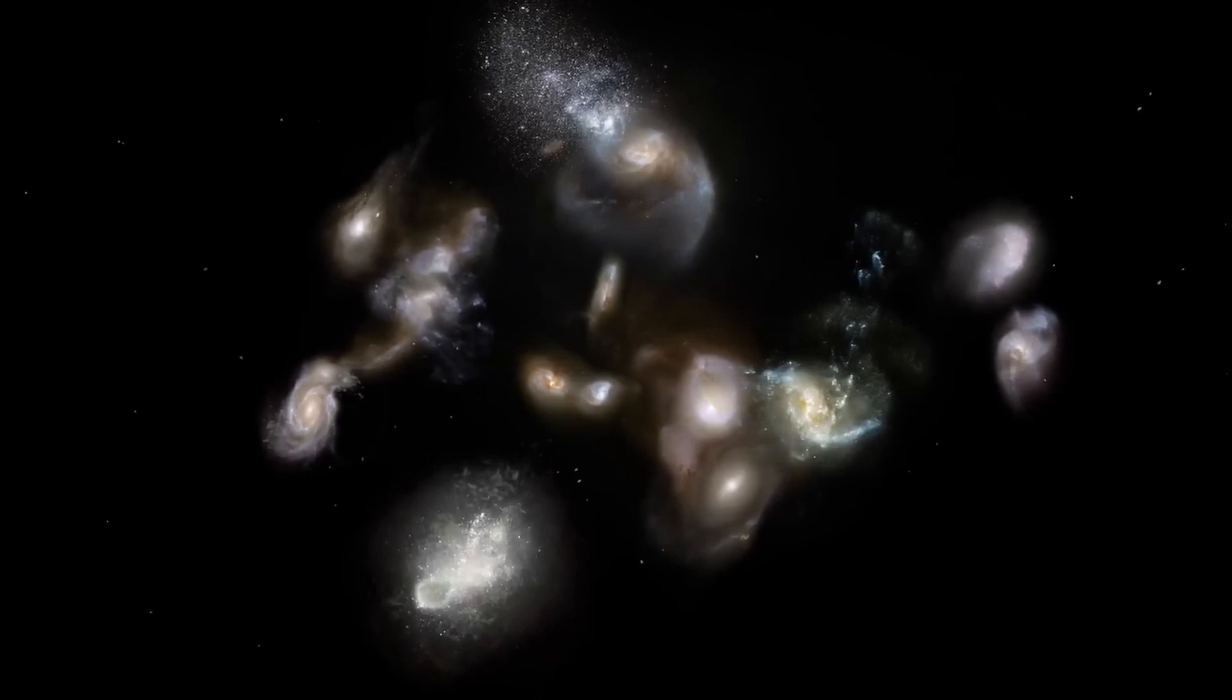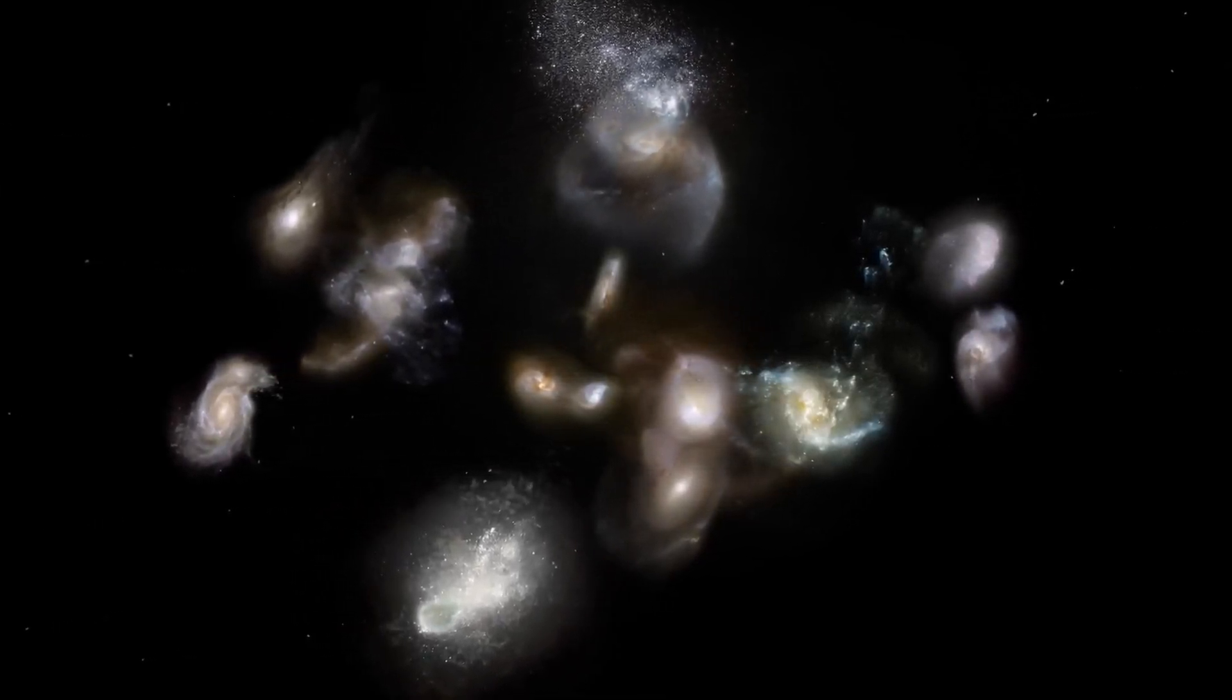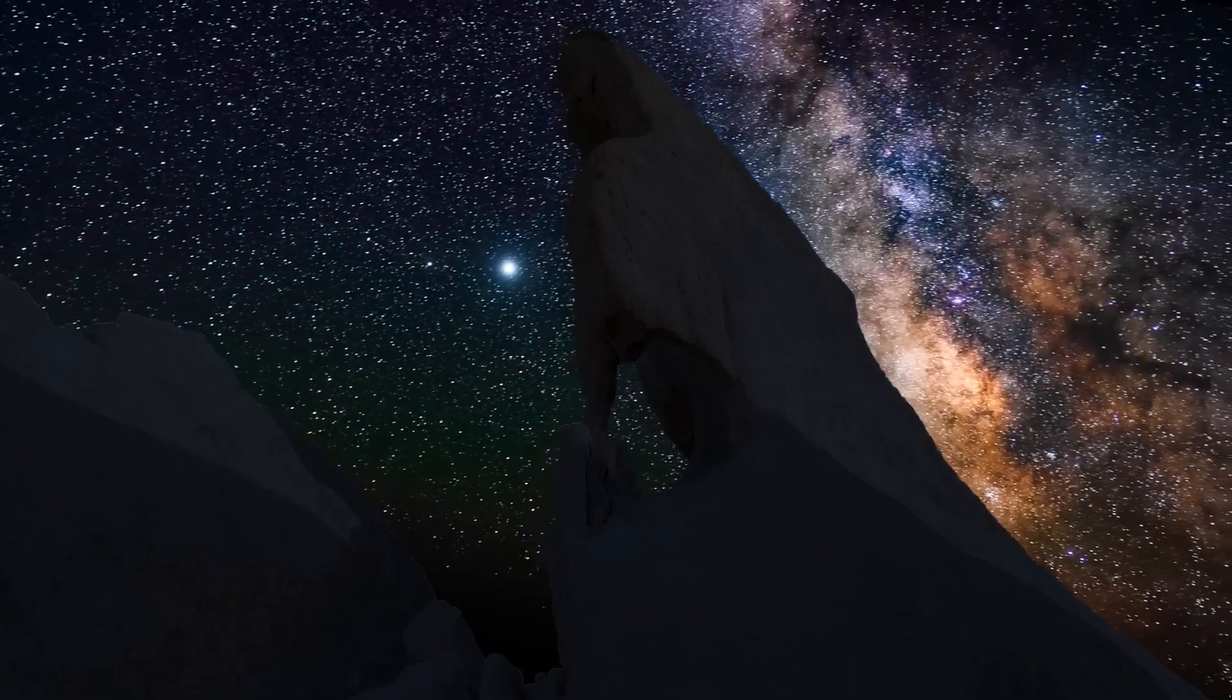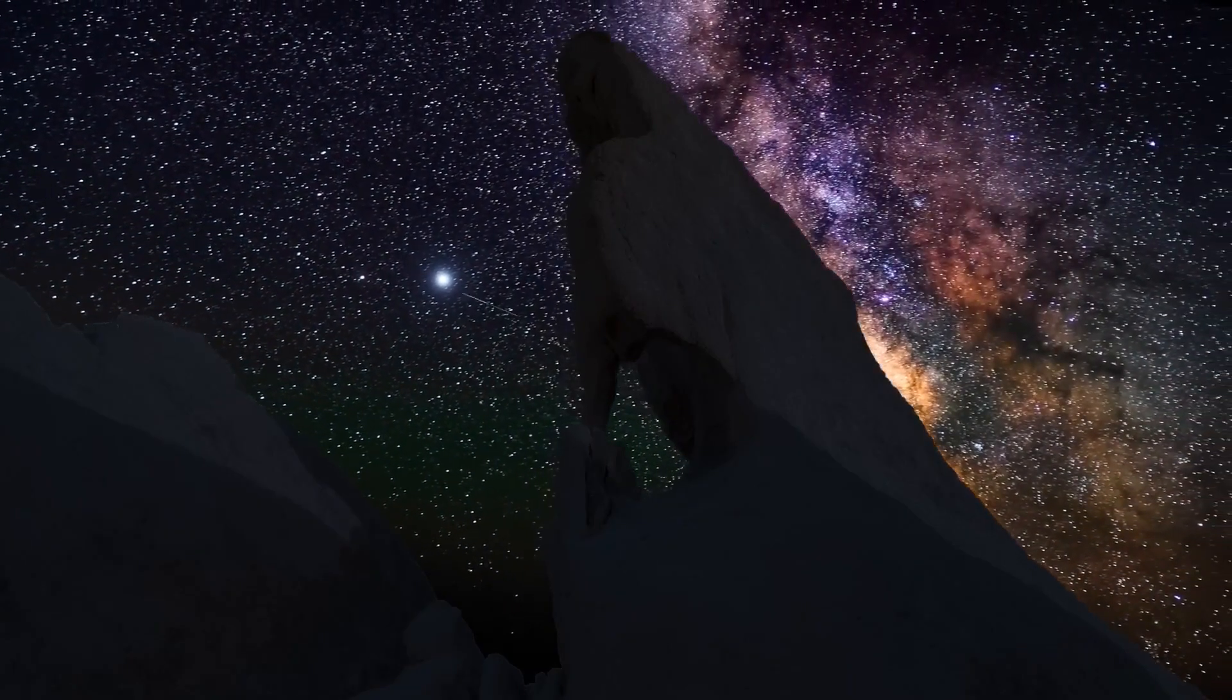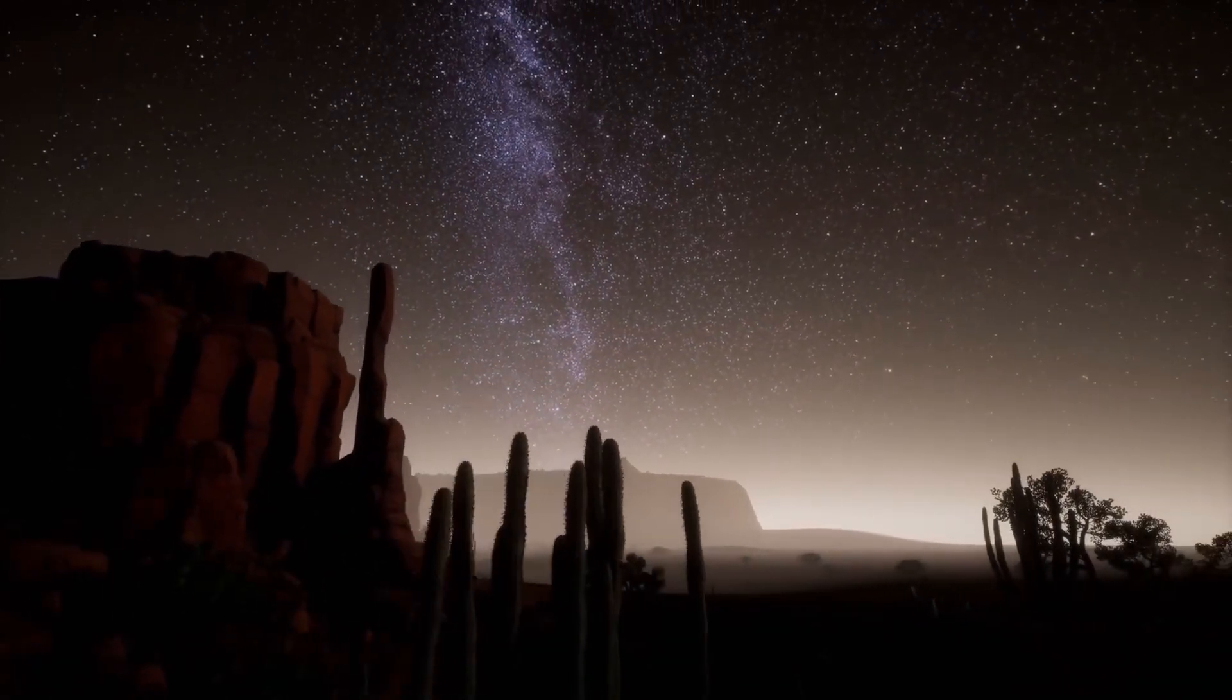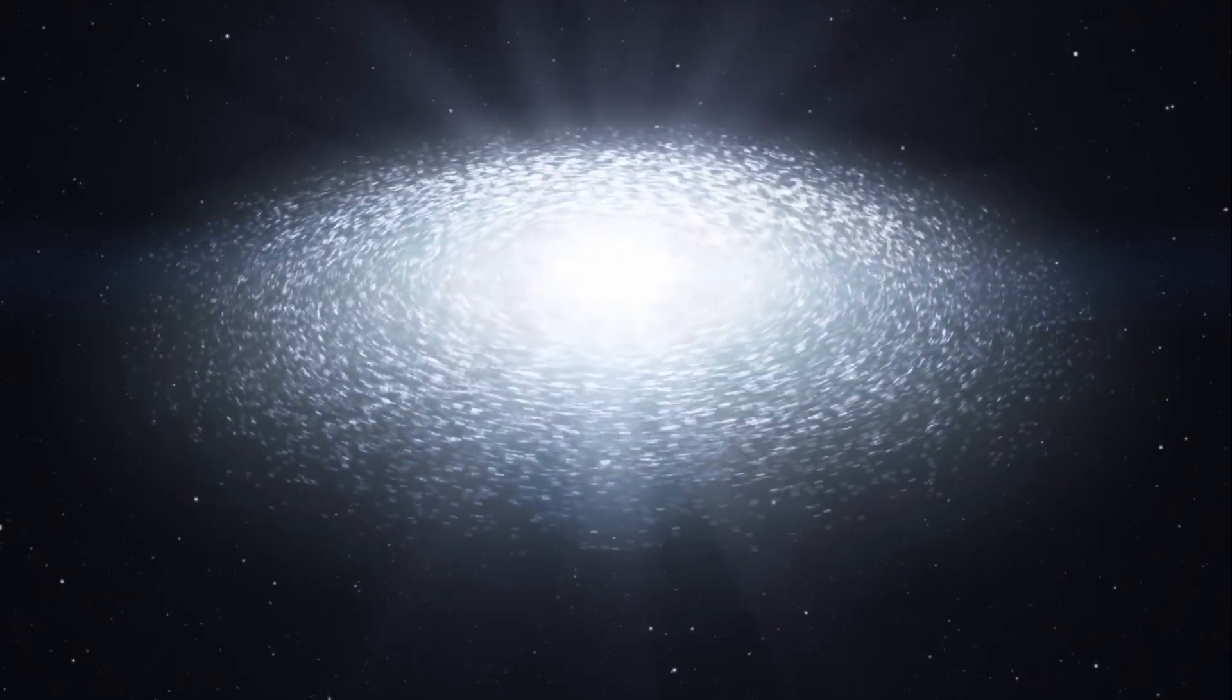In the 1930s, Fritz Zwicky conducted research into galaxy clusters, in particular the Coma galaxy cluster. He postulated that an invisible mass, which he called dark matter, must be present in order to explain certain dynamics that cannot be caused by gravity alone. His theory of dark matter was initially controversial but later became part of standard cosmology.